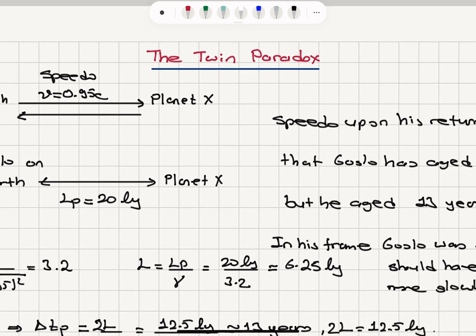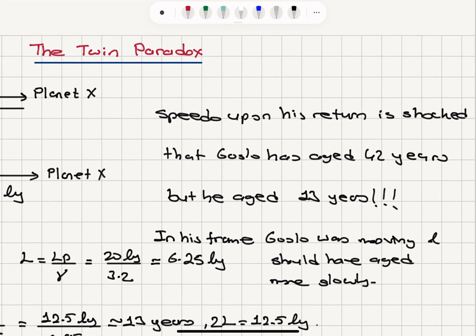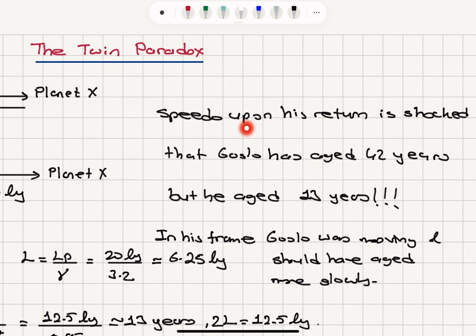So what happens? Speedo, upon his return to Earth, is shocked that Goslo has aged 42 years, but he aged only 13 years. How is this possible?